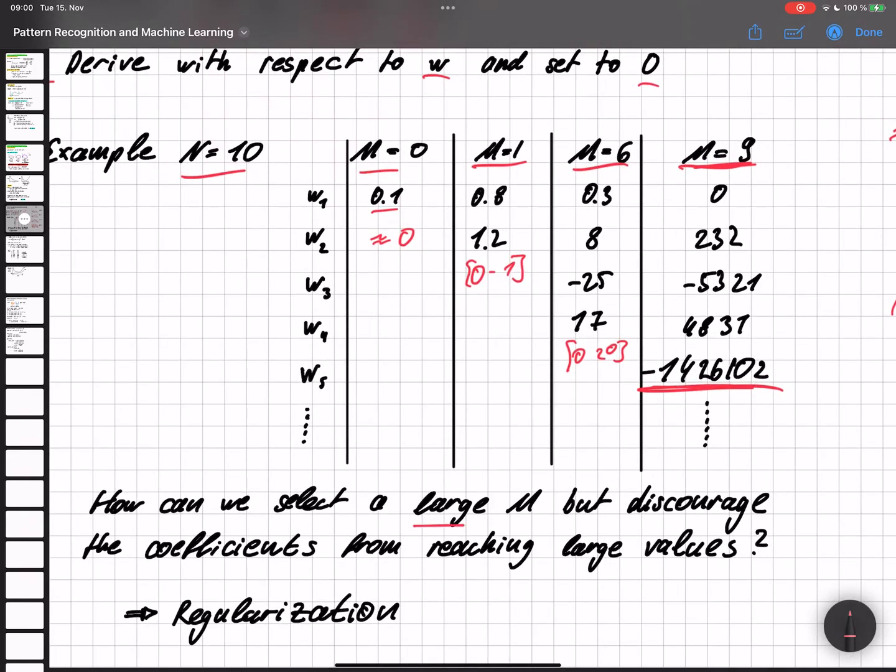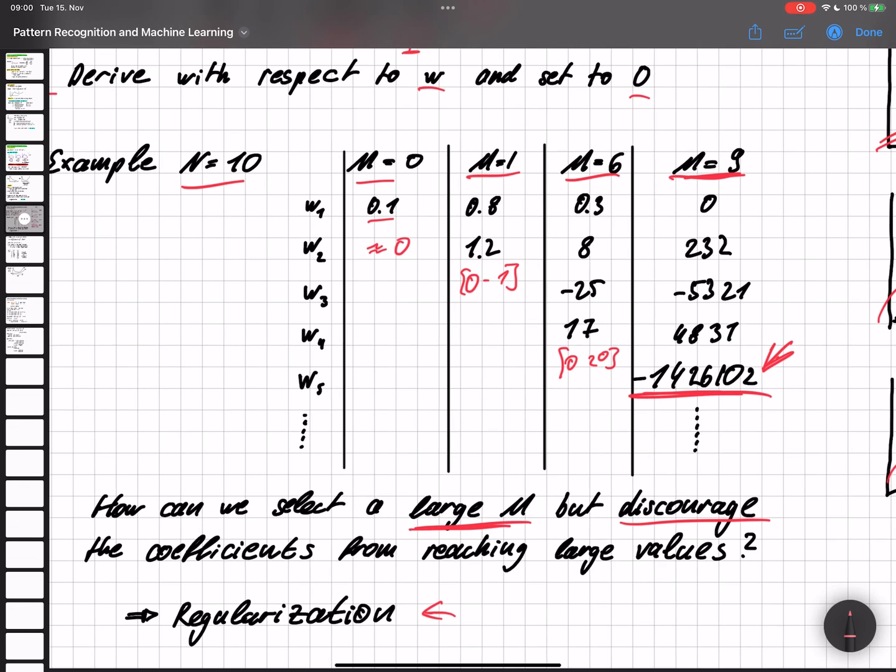Now the question is, how can we select a large m, so a large degree of our polynomial but discourage it from getting those large coefficients? And this is exactly where the topic of regularization comes into play.